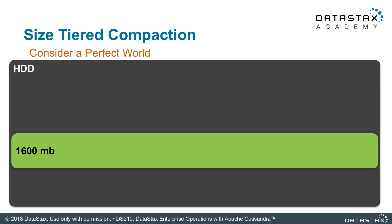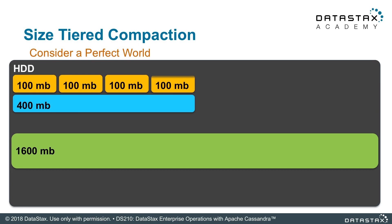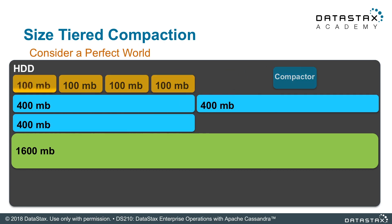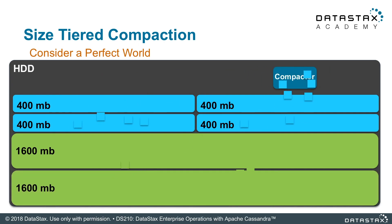This process runs continuously in the background. As compactions keep running — this is a 100% automatic process — eventually you're going to start seeing smaller files turning into larger files sitting there. Because once you get to that larger file, you're going to need more of those to compact.